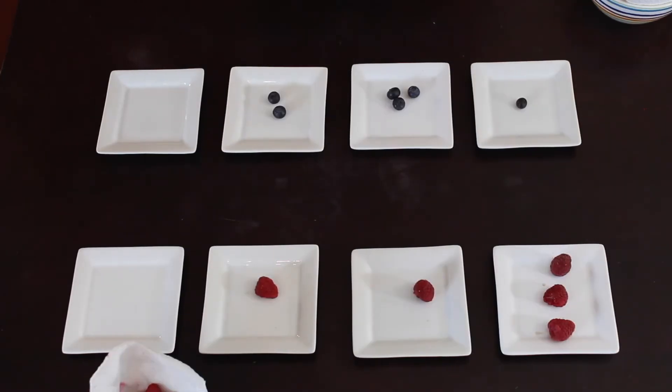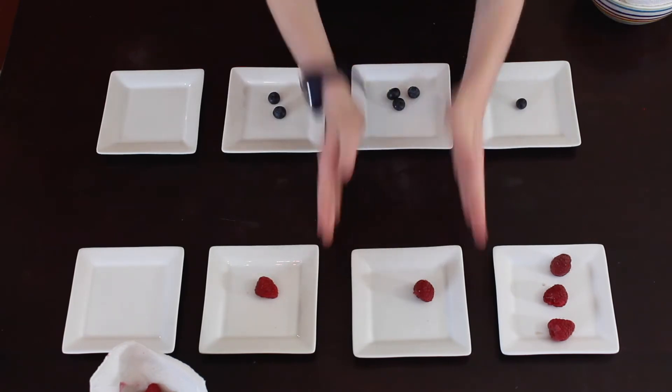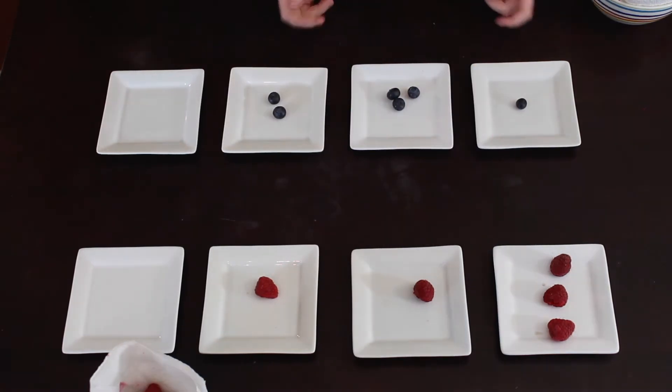Now we're using blueberries for dots and raspberries for anti-dots. We're going to do 231 minus 113.